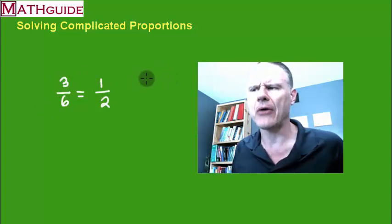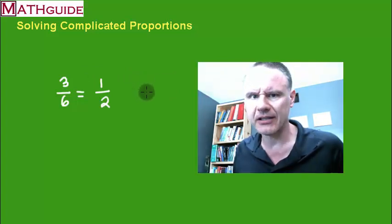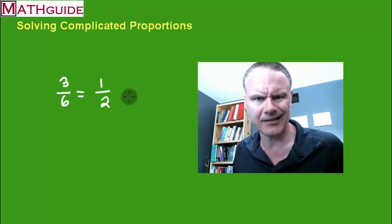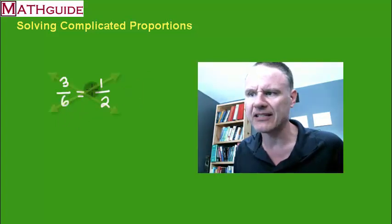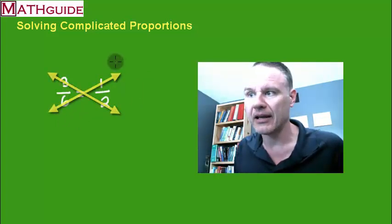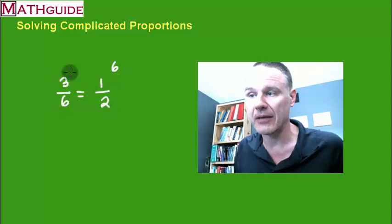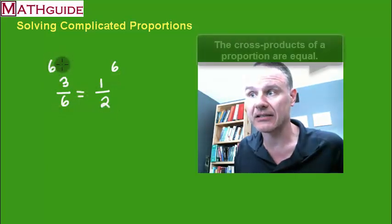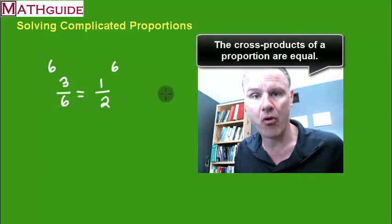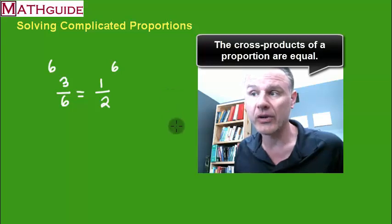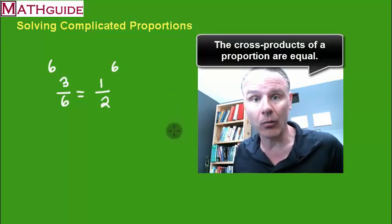Now what's interesting about this particular equation is that we can cross multiply and see an interesting pattern. If I take 6 times 1 I get 6. If I take 3 times 2 I get 6. Notice how those two products are equal. So we say the cross products are equal.